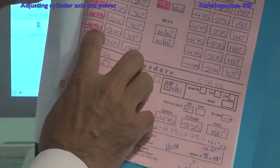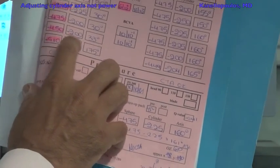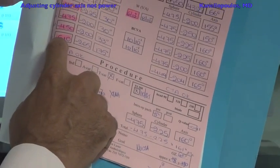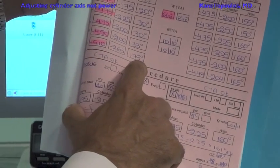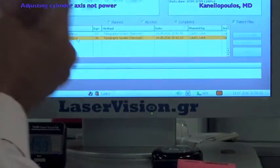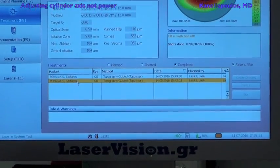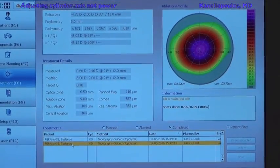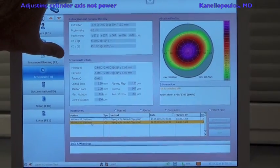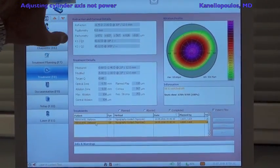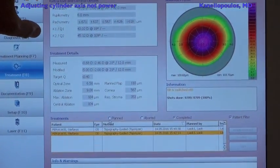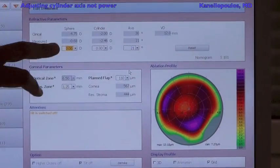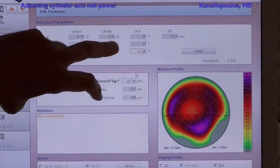The autorefraction after cycloplegia is minus 4.75 minus 2 at 33 degrees. Very importantly, the wavefront measurement is minus 5 minus 2.65 at 175 degrees. If we take the topography data and incorporate it into treatment, let's see what the treatment will look like in its planning. Our clinical is 4.75 minus 2 at 30.